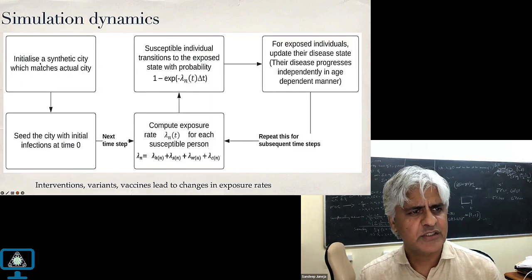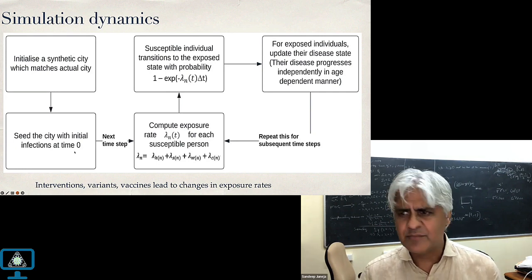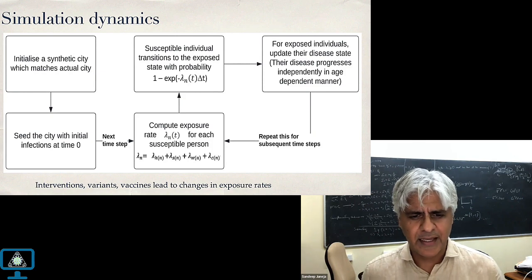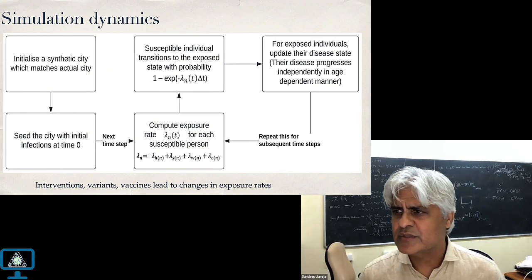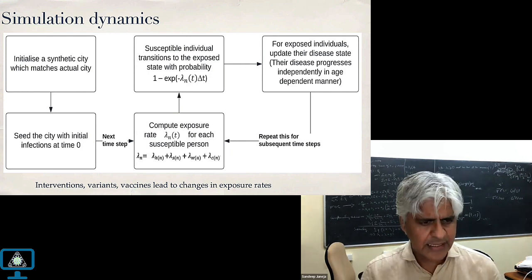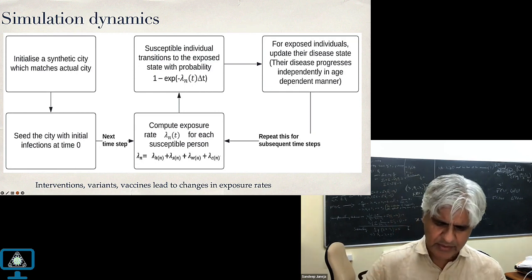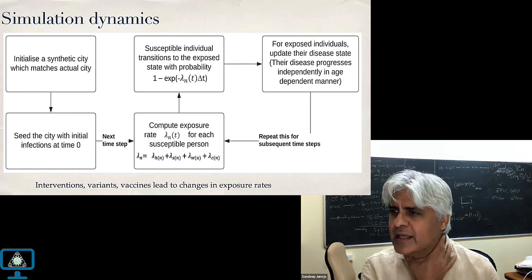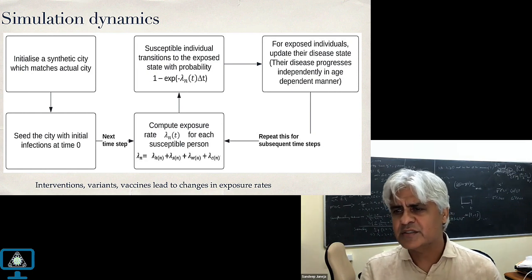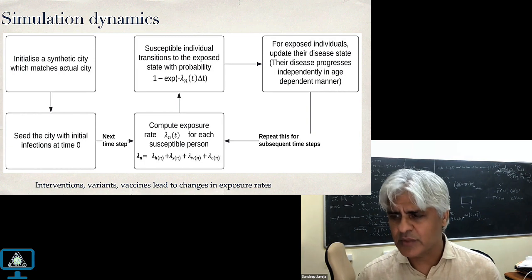How does the simulation dynamics work? We initialize a synthetic city which matches the actual city, then seed it with initial infection at time zero — chosen around February 15th, 2020. Starting with 100 people randomly distributed, the fatality profile for a calibrated model exactly matches what we saw in Mumbai in late March, early April, before lockdowns. Time is incremented every six hours; we look at every susceptible person, compute the rate of exposure to infectious people, flip a coin, and with some probability the person becomes exposed, then follows the disease progression cycle independently.